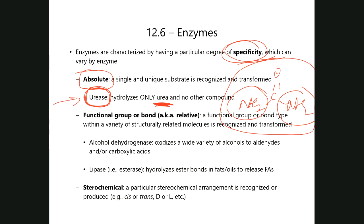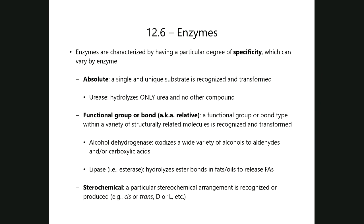Some enzymes are less specific — they will recognize a particular type of functional group or bond. This is called relative specificity. It doesn't matter the structural context; as long as structures contain a particular functional group or bond type, that enzyme can target those substrates and transform them.